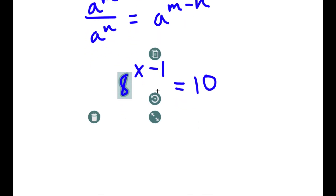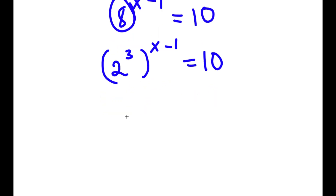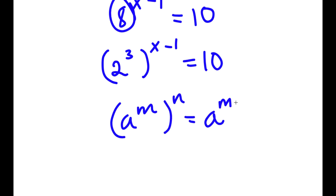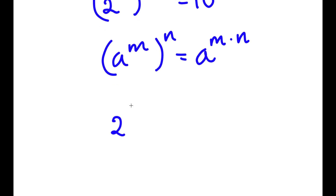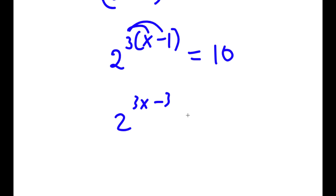Now, 8 is the same as 2 to the power of 3, so I have 2 to the power of 3 to the power of x minus 1 is equal to 10. Since (a^m)^n equals a^(m times n), this becomes 2 to the power of 3 times (x minus 1) equals 10. Distributing the 3, I get 2 to the power of 3x minus 3 is equal to 10.